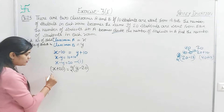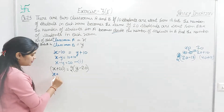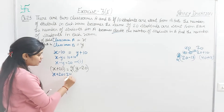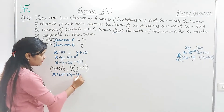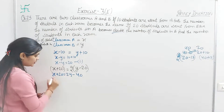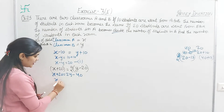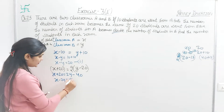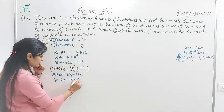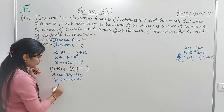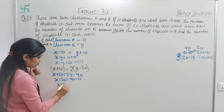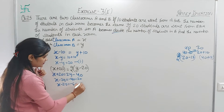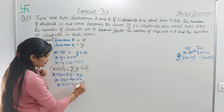Solving equation 2: x plus 20 equals 2y minus 40, so x minus 2y equals minus 40 minus 20, which gives x minus 2y equals minus 60. This is equation 2. So our two equations are: equation 1 — x minus y equals 20, and equation 2 — x minus 2y equals minus 60.